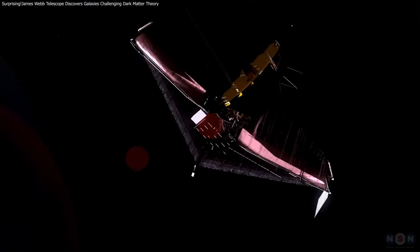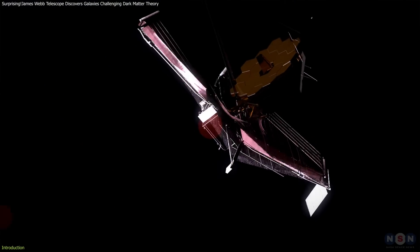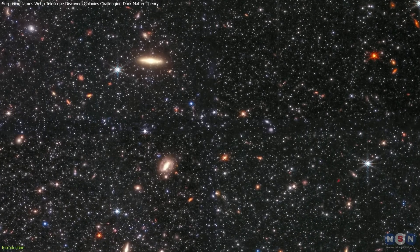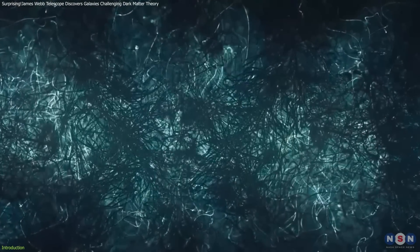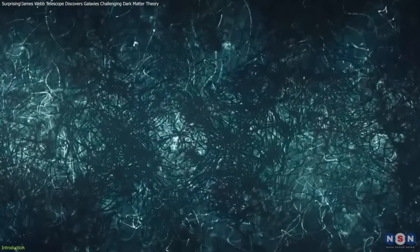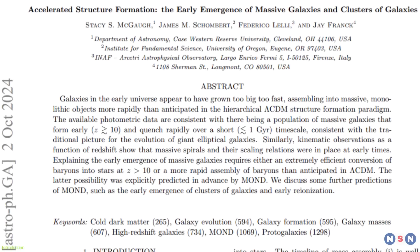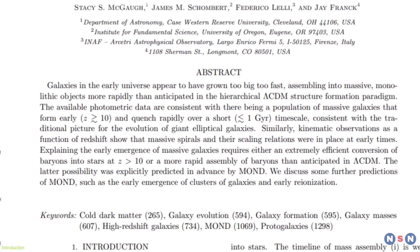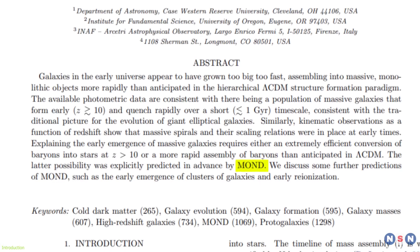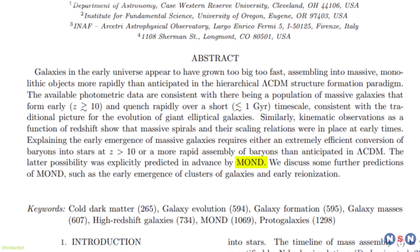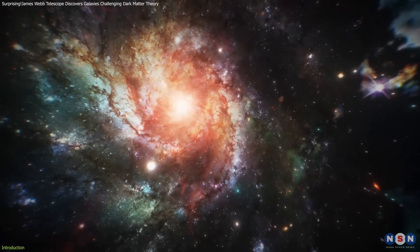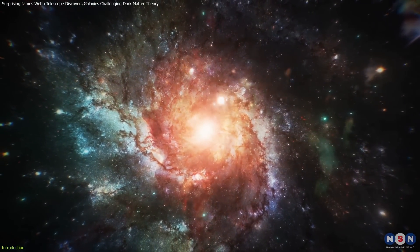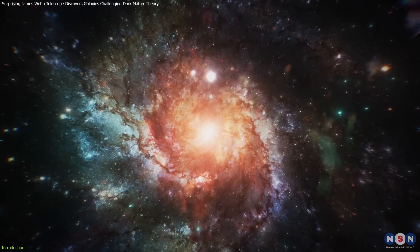The James Webb Space Telescope has captured images of ancient galaxies that are far larger and brighter than expected, challenging our traditional view of dark matter. This surprising find has reignited interest in an alternative theory called Modified Newtonian Dynamics, or MOND, which offers a new perspective on gravity's role in shaping galaxies.